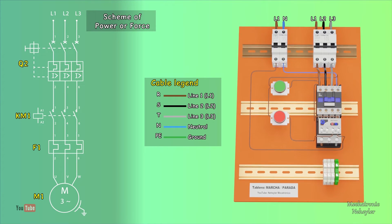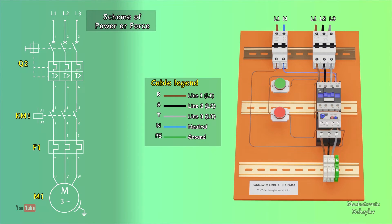From the output of the thermal relay, it is taken to the terminal blocks or terminals, where, from that point, the load is going to be connected, which in this case is the motor.